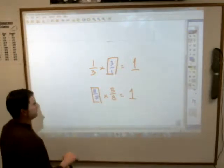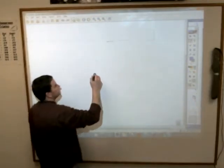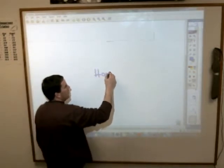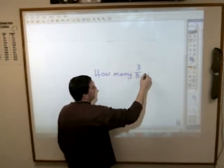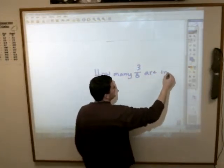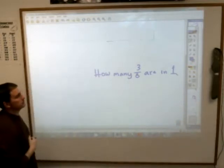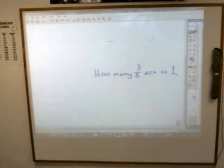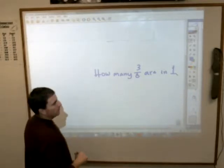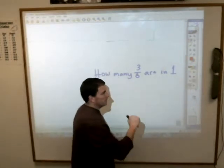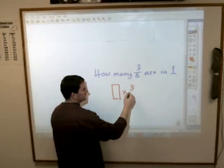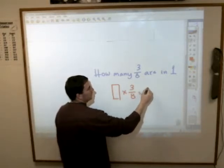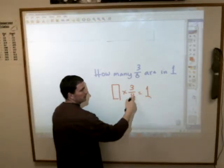Another thing they might do is this. How many 3 8ths are in 1? How many 3 8ths do you get out of 1? Now think about that. What they're actually asking you is just what we're talking about there. What number times 3 8ths will give you 1? How many 3 8ths can you get out of 1?